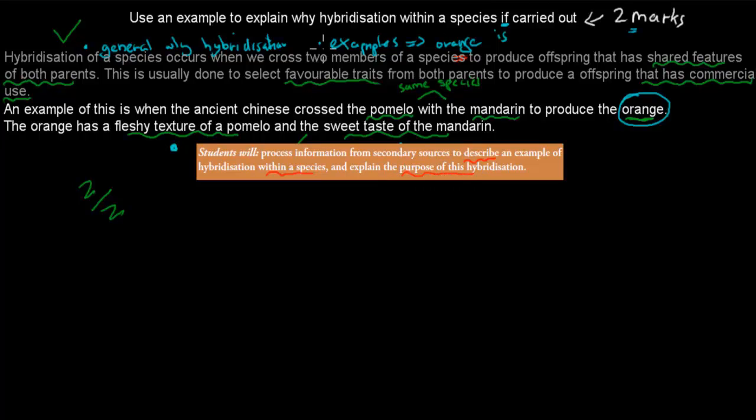So that's more or less what we were asked to do. Use an example to explain why the hybridization within a species is carried out. So here we said we need to know an example, and here we need to go through the purpose of that hybridization.